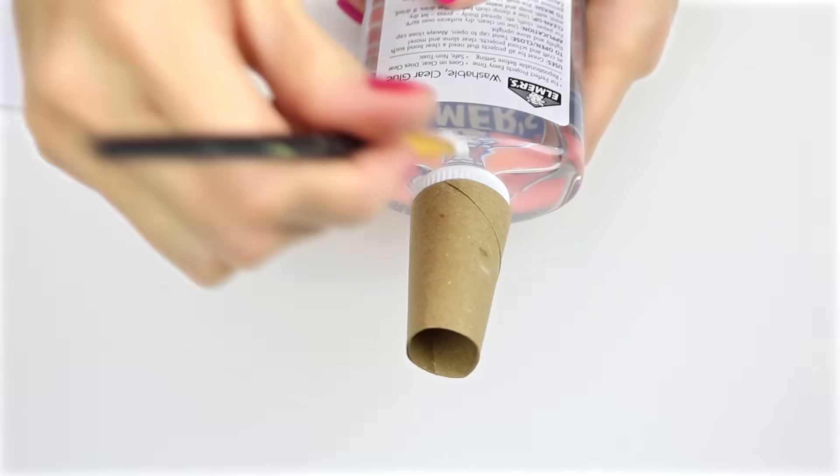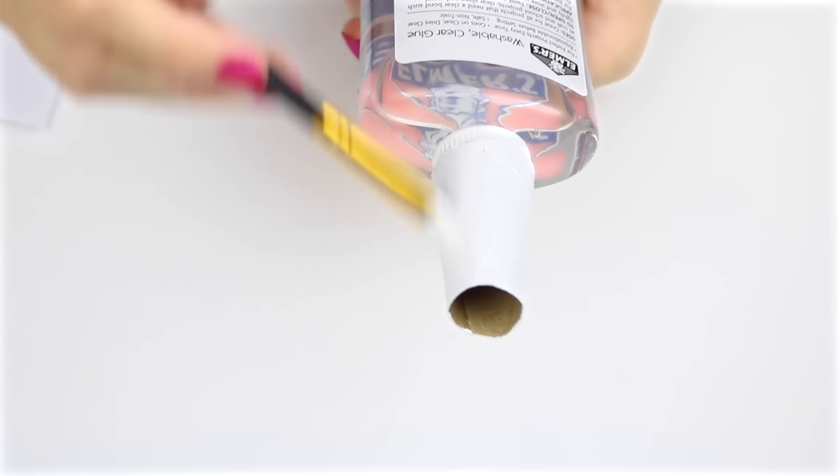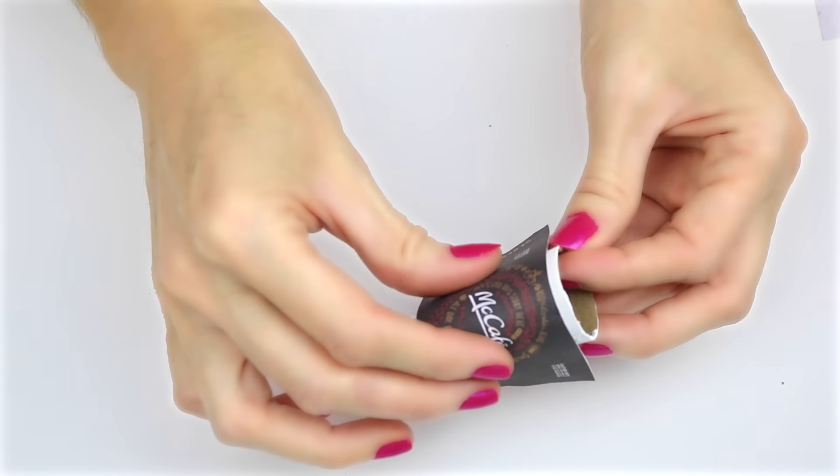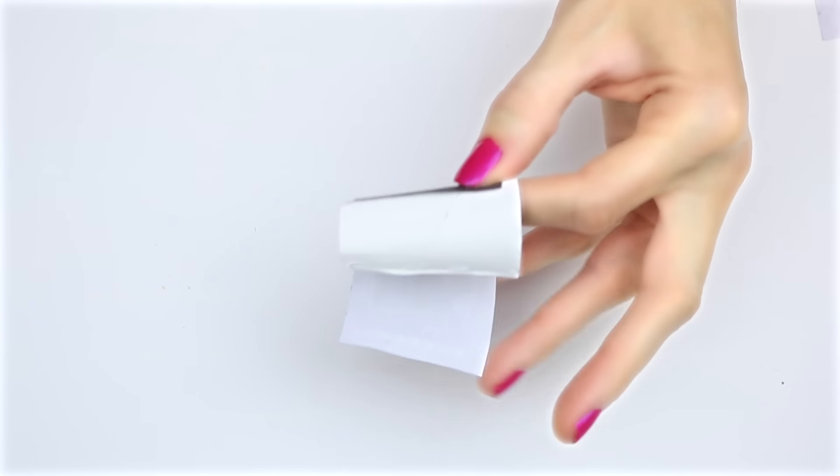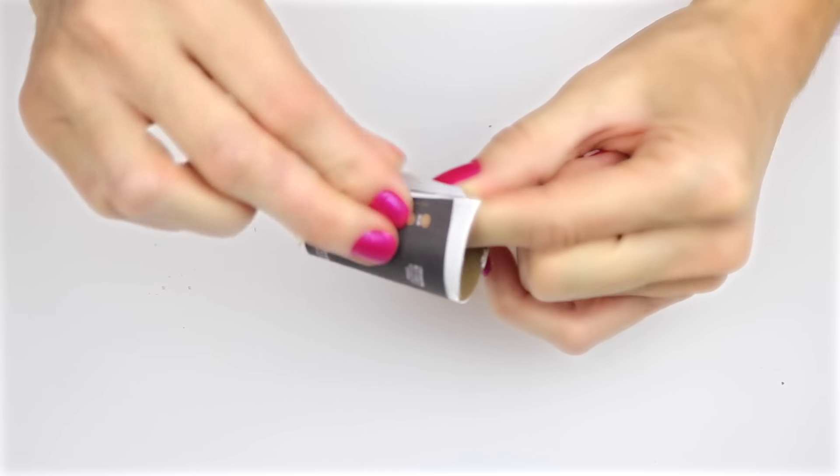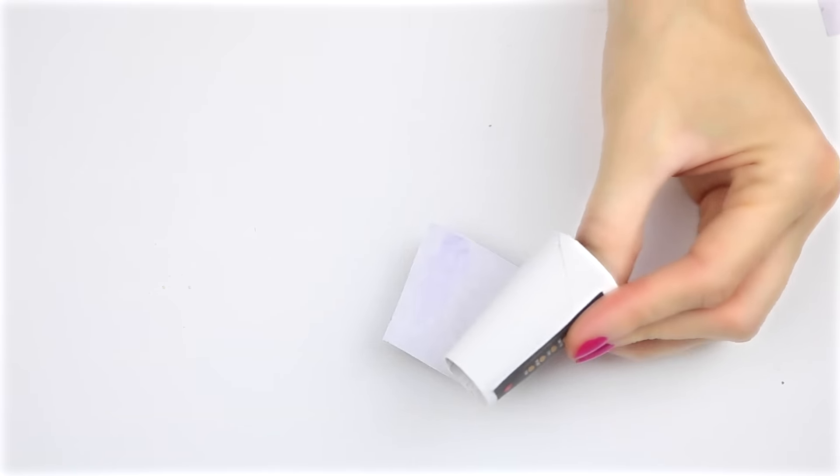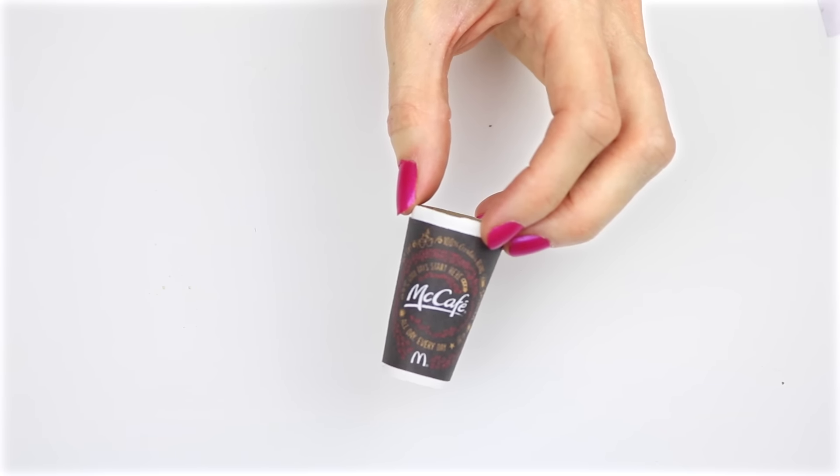Paint the toilet roll piece with some white acrylic paint. Once the paint has dried, wrap the printable around it and secure it with glue. Here is mine at this point.